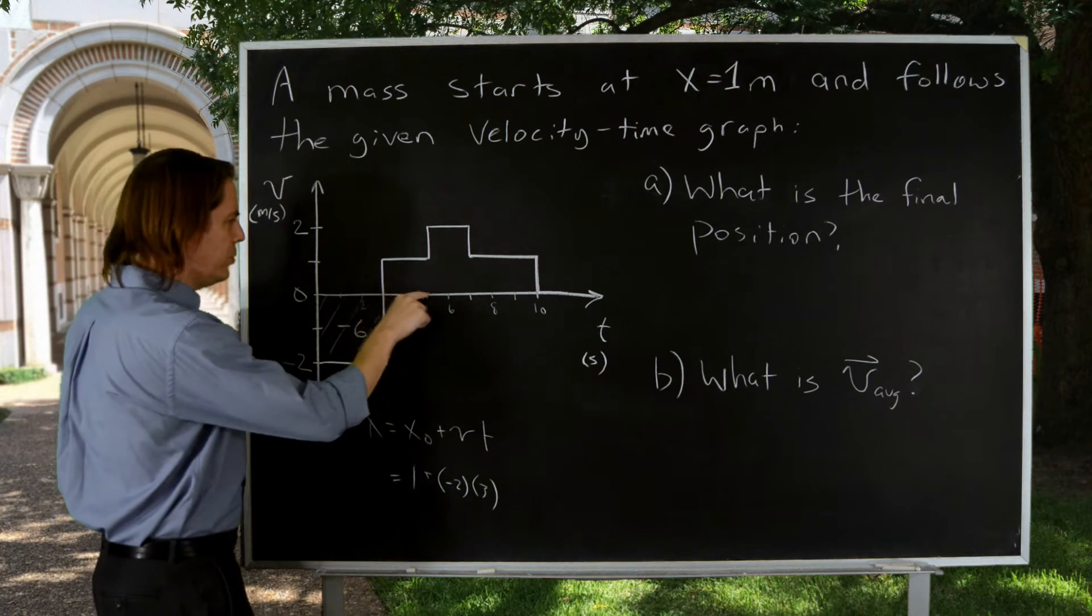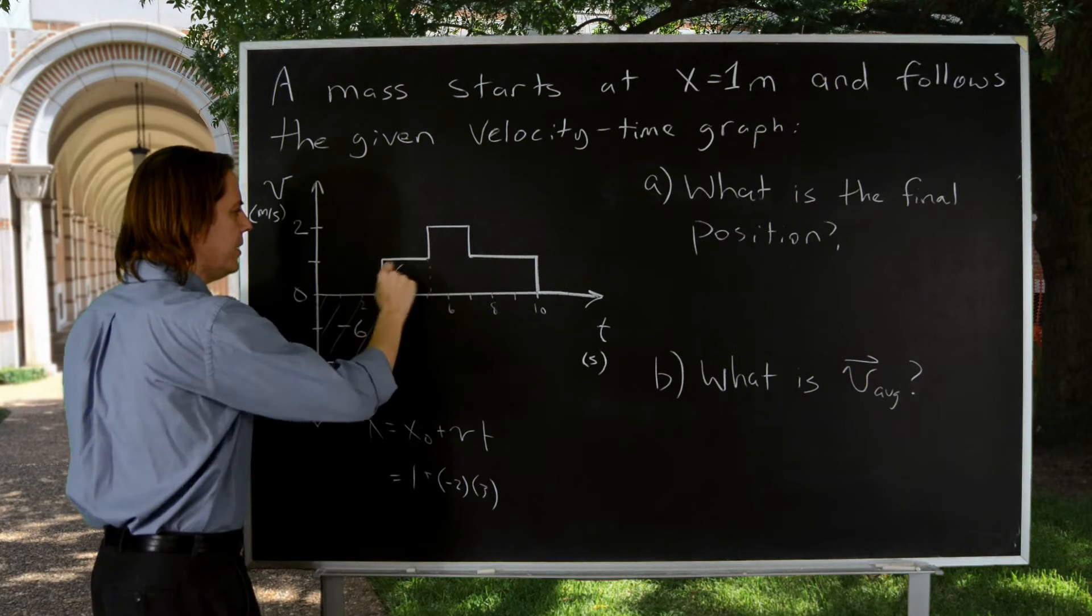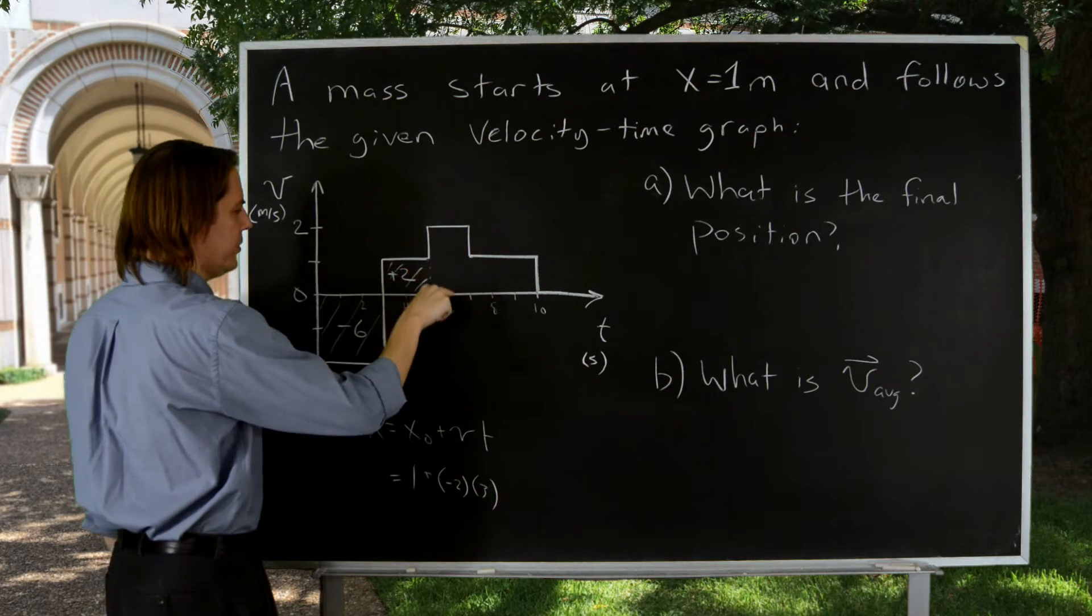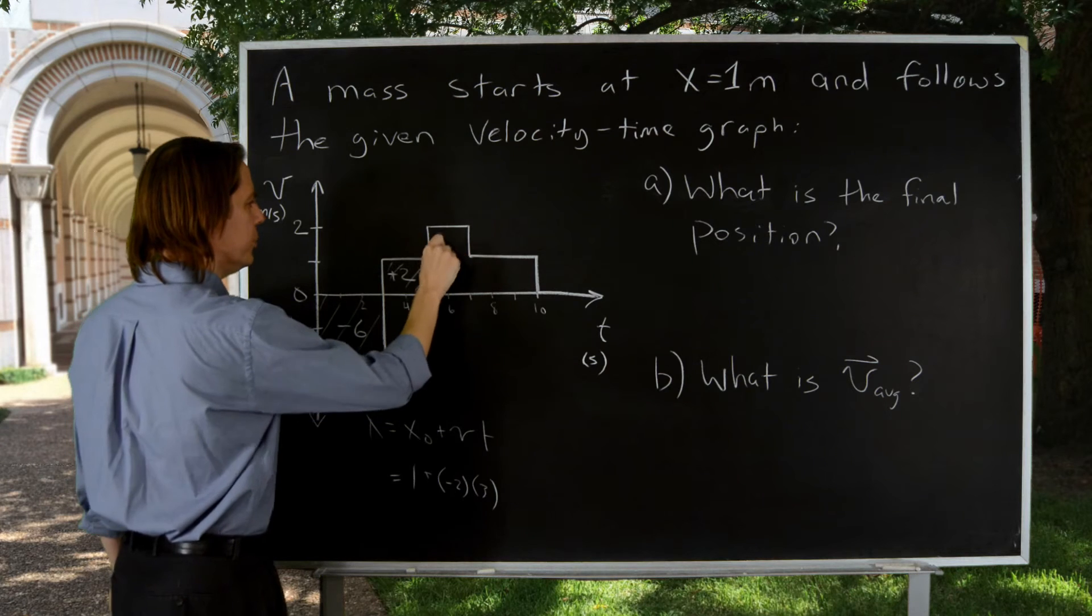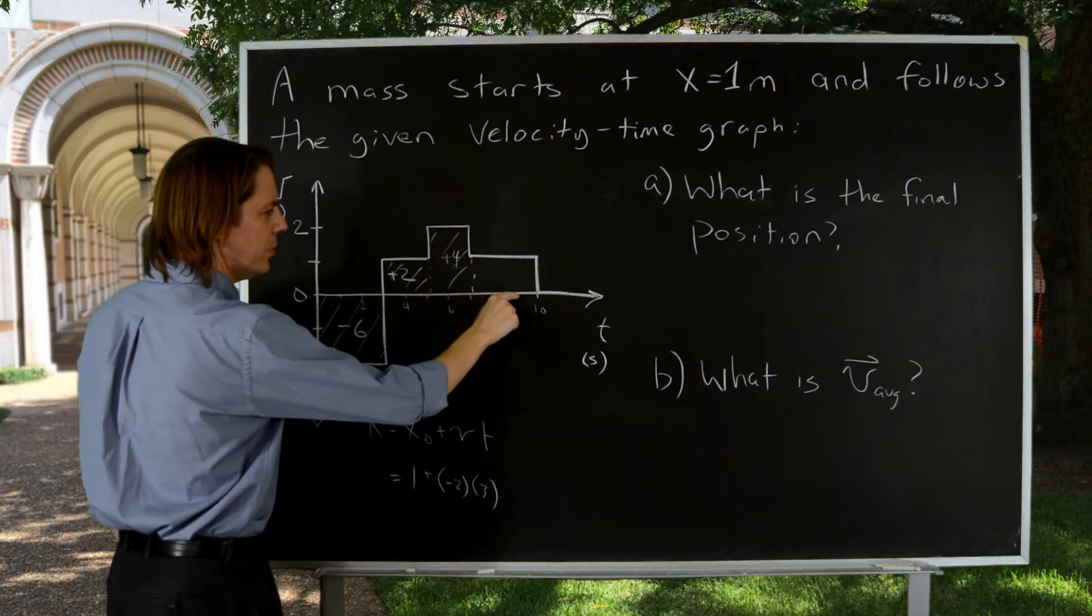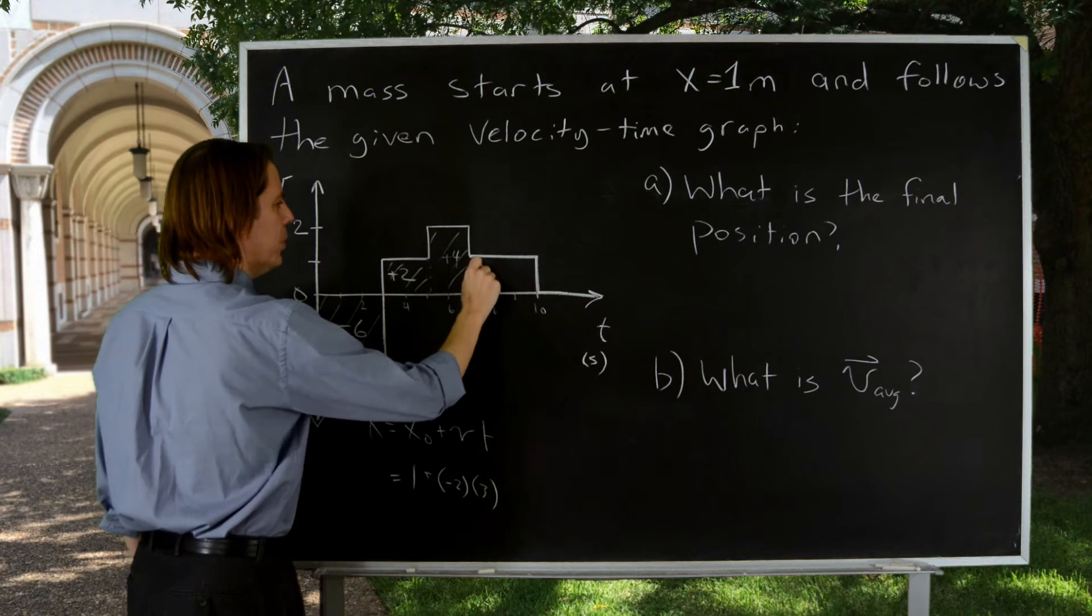Here we've got two, one, so this part right here is two plus two. This part is two times two, is plus four for that area. And then this one is three times one, is plus three.